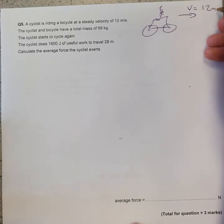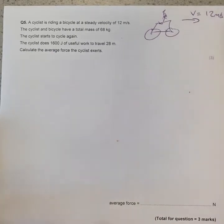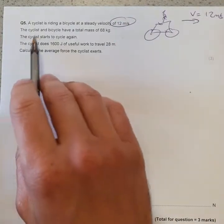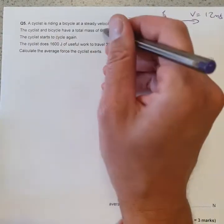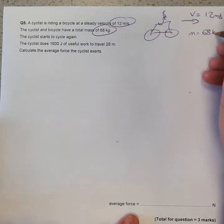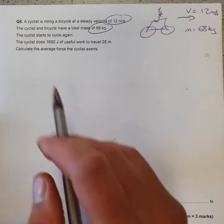of 12 meters per second. The cyclist and the bike have a total mass of 68 kilograms, so m is 68 kg.